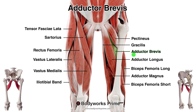You can see the adductor brevis labelled right here, and I've highlighted the adductor brevis itself in green. You'll also notice on the other leg we've got the quadricep muscles, the sartorius, TFL, and the iliotibial band — and they've all been removed on this other leg so that we can actually see the adductor brevis muscle, because it is a deep muscle which can't be seen from a superficial view.